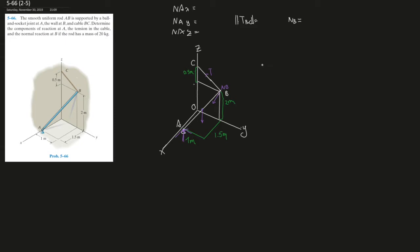When doing these long problems I like to simplify as much information as possible first. Since the rod is smooth and uniform, the center of mass is right in the middle. The weight at the center of mass equals 9.81 m/s² times 20 kg, which gives you 196.2 Newtons.